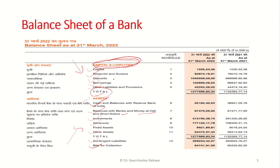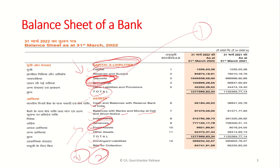In the balance sheet of a bank, there are two important things. The first one is deposits and the second one is advances — this is the main business of a bank. Deposits are the source of funds through which you lend the money, and advances are the means by which the bank lends money to the general public or the corporate.